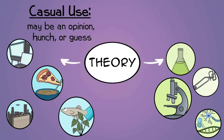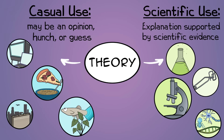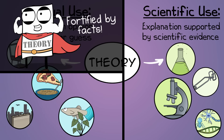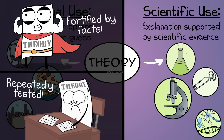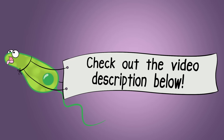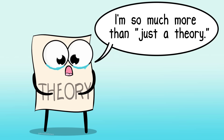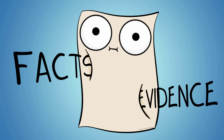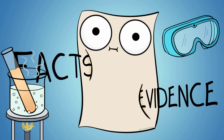It's important to understand that you are using the word theory very casually. A scientific theory is a very different thing. A scientific theory is an explanation supported by scientific evidence. It's fortified by facts. It's been tested repeatedly. A scientific theory cannot be dismissed as just a theory. In order to reach the level of scientific theory, it must be backed by scientific facts and evidence supporting it with repeated testing.